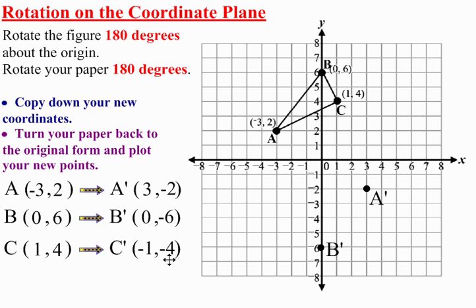C prime is negative 1, negative 4, 1 to the left, and 4 down, and that is C prime.